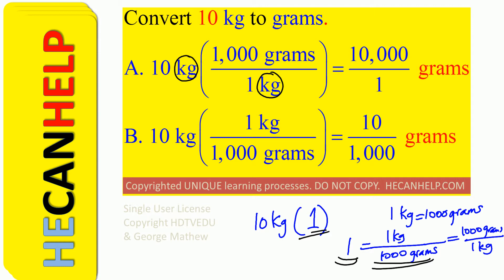If you're told that 5 kg equals 5,000 grams, then you put 5 kg and then 5,000 grams. So you want kg and kg to cancel. The only way you can cancel kilograms and get grams to remain on the top is to go with A. You take 10, multiply by 1,000, and get 10,000. Whatever is at the bottom, we have 1. So 10,000 divided by 1. The answer is A.